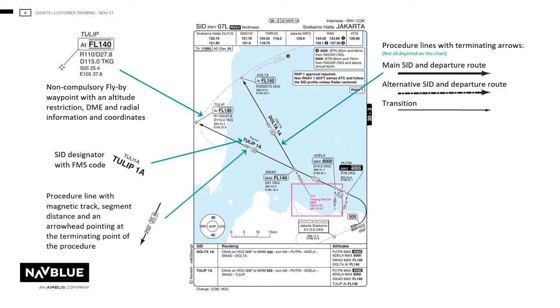The procedure line will show magnetic heading and distance. Distances will be shown in decimals. If the official distance is more than 30 nautical miles, NAVBLU will round to the nearest whole value.